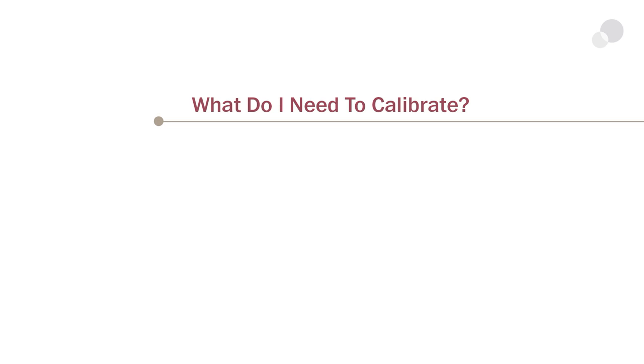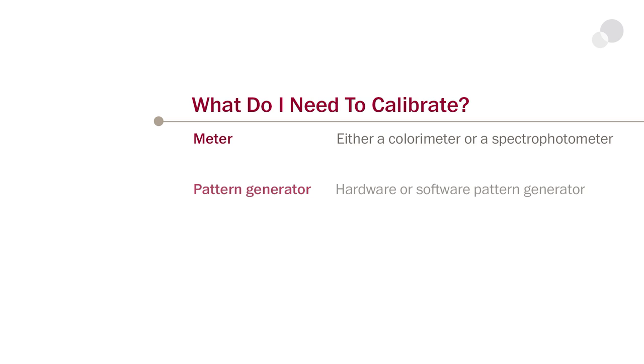So what do you need to calibrate? You can either hire a professional company like AbleCine or you can build your own kit. You really only need three things to calibrate: you need a meter to measure your display, you need a pattern generator to put test video signals on your display to measure, and then finally you need some software to drive those two pieces of hardware and do the math to tell you what's going on.